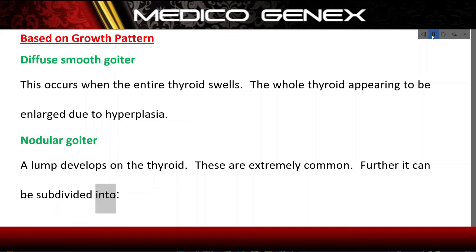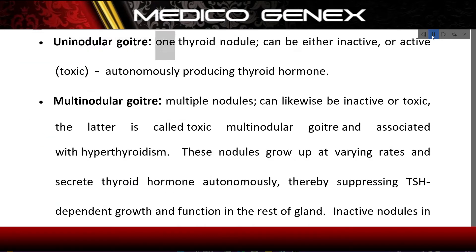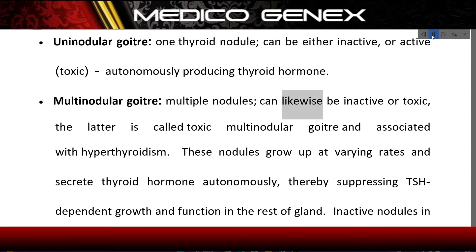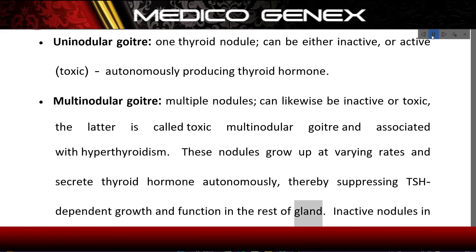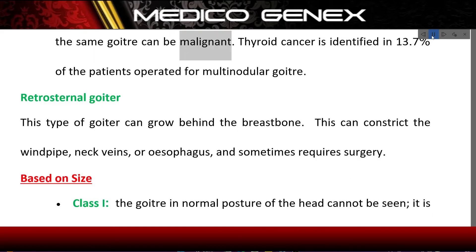Further, it can be subdivided into: Uninodular goiter — one thyroid nodule, which can be either inactive or active (toxic), autonomously producing thyroid hormone. Multinodular goiter — multiple nodules, which can likewise be inactive or toxic. The latter is called toxic multinodular goiter and is associated with hyperthyroidism. These nodules grow at varying rates and secrete thyroid hormone autonomously, suppressing TSH-dependent growth. Inactive nodules in the same goiter can be malignant; thyroid cancer is identified in 13.7% of patients operated for multinodular goiter.